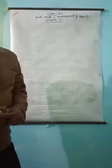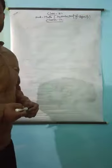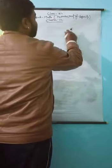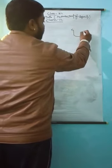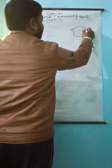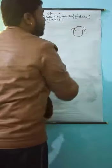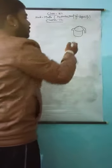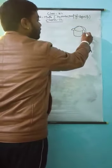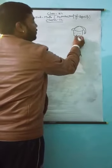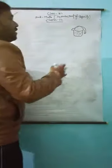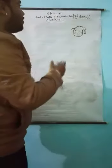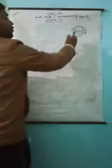Today we will learn measurement of capacity. Capacity means the quantity of liquid that a container or vessel can hold. This is called measurement of capacity. Suppose there is a mug — my drawing is not great but you can understand this is a mug. We want to fill water in this mug, so how much water is in this vessel, in this container, in this mug — we will find out in this chapter.